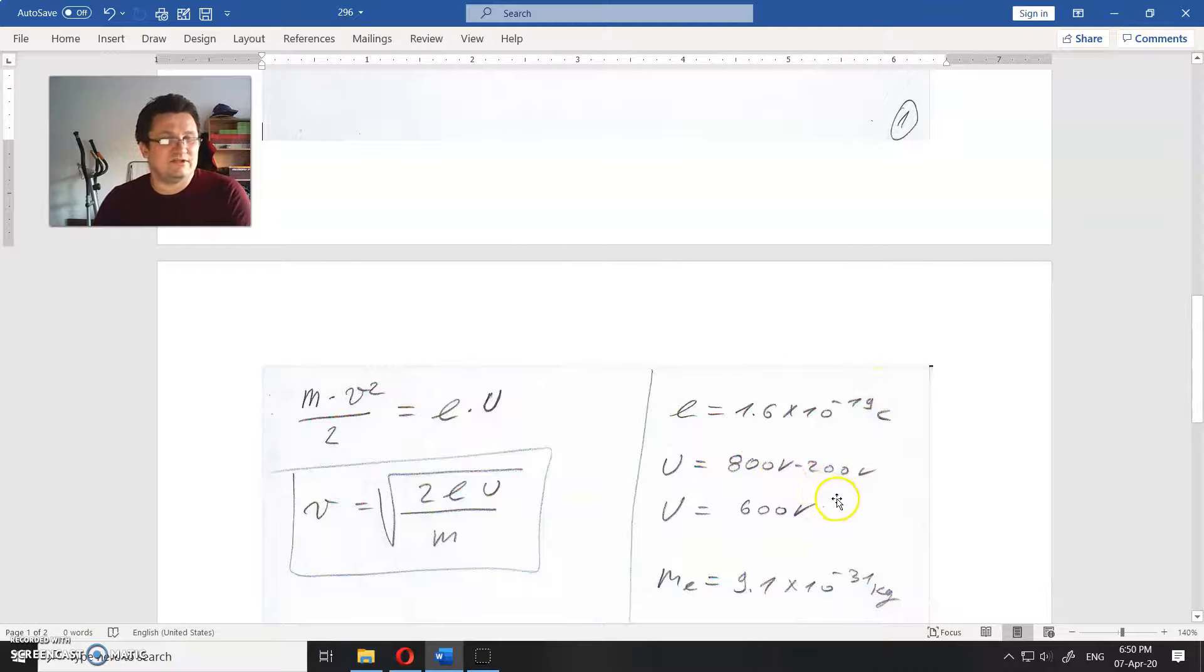And voltage or potential difference is 800 volts minus 200 volts, that is 600 volts. And for this mass, if we calculate the electron, is 9.1 times 10 to the minus 31 kilograms.